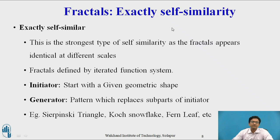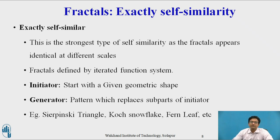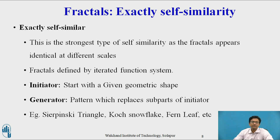Exactly self-similar fractal is the strongest type of fractal which appears identical at different scales. These fractals are defined by an iterated function system. In this we have an initiator and a generator. Initiator is a given geometric shape, and generator is a pattern which replaces the sub-part of the initiator. Examples are Sierpinski triangle, Koch snowflake, and fern leaf.